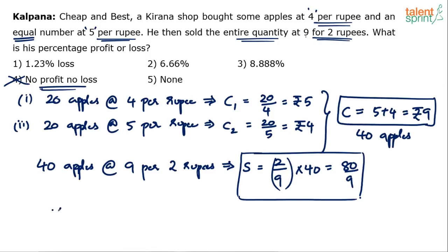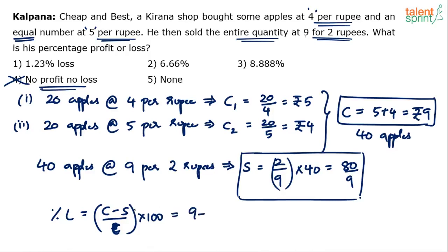Find out the loss. Since it is a loss case, loss percentage equals cost price minus selling price, divided by cost price, into 100. Loss and profit are always calculated on cost price. So: 9 minus 80 by 9, divided by 9, into 100. This gives 9 times 9 = 81, then 81 minus 80 = 1, so the result is 1 by 9 divided by 9 into 100, i.e., 100 by 81.